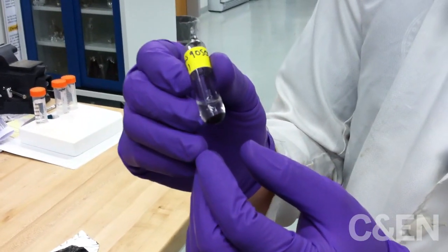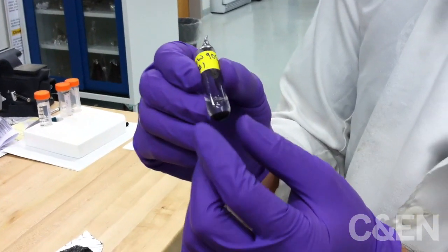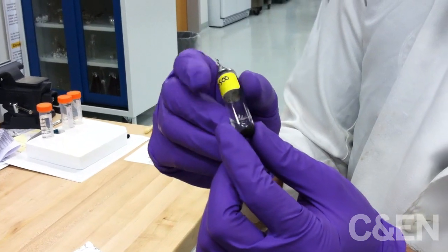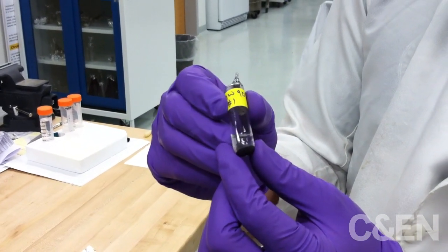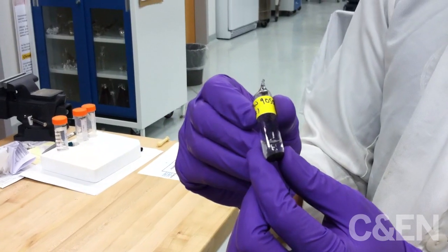The next thing we do is extract these meteorites. We put a little bit of the meteorite powder into a solution of formic acid and heat this up at 100 degrees Celsius for 24 hours.